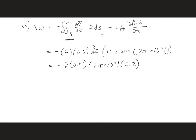And after taking the derivative of sine, we get cosine 2 pi times 10 to the 6th t.